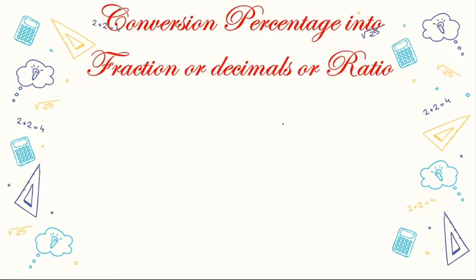Now, percentage into fraction, decimal, or ratio. If we want to convert a percentage into fraction, decimal, or ratio, we do the reverse — instead of multiplying by 100, we divide by 100. So for a fraction like 2/3 expressed as a percentage, we multiply by 1/100. Similarly, to convert back, divide by 100.